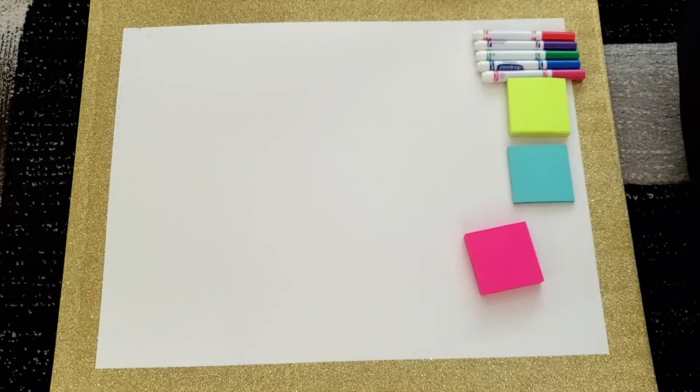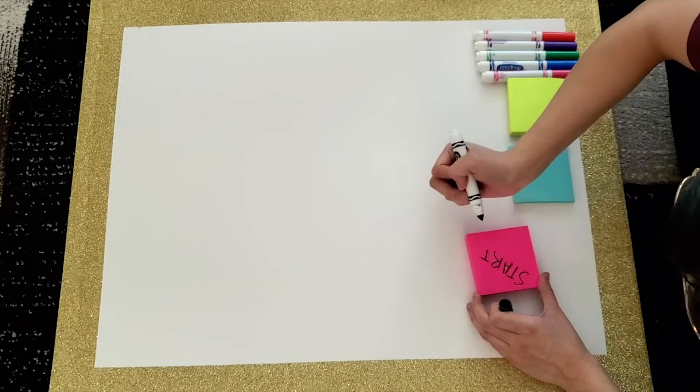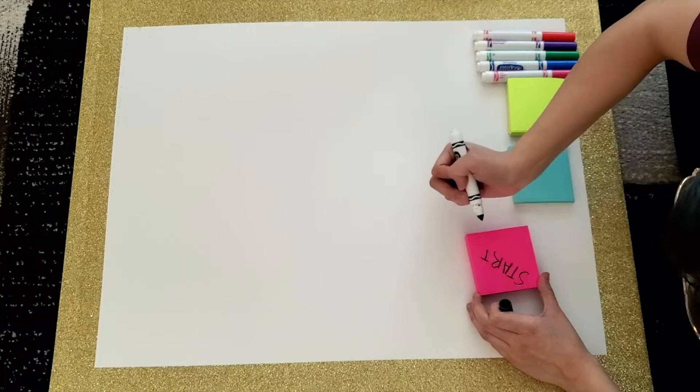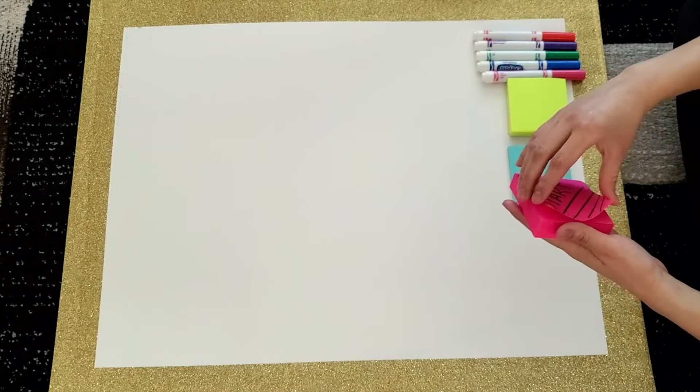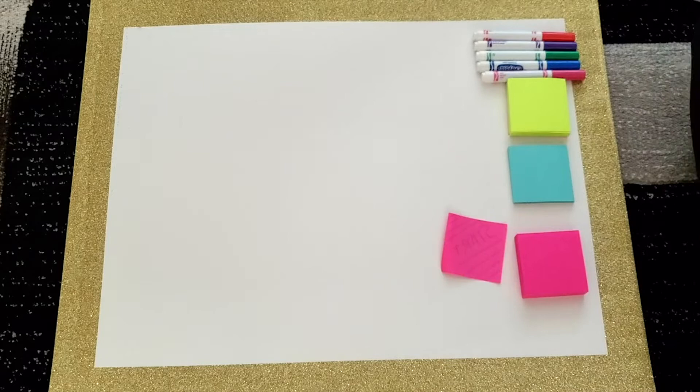So the first thing that we want to do is we want to start off by writing out the word start on one of our post-it notes. So as you can see here, I chose the pink post-it note to write out start. So that way, when we do begin playing our game on our game board, all the players know where to start and begin the game on. And then we're going to grab the glue stick and then we're just going to be gluing the back of the post-it note. So that way we can make sure that it does actually stick on the construction board.